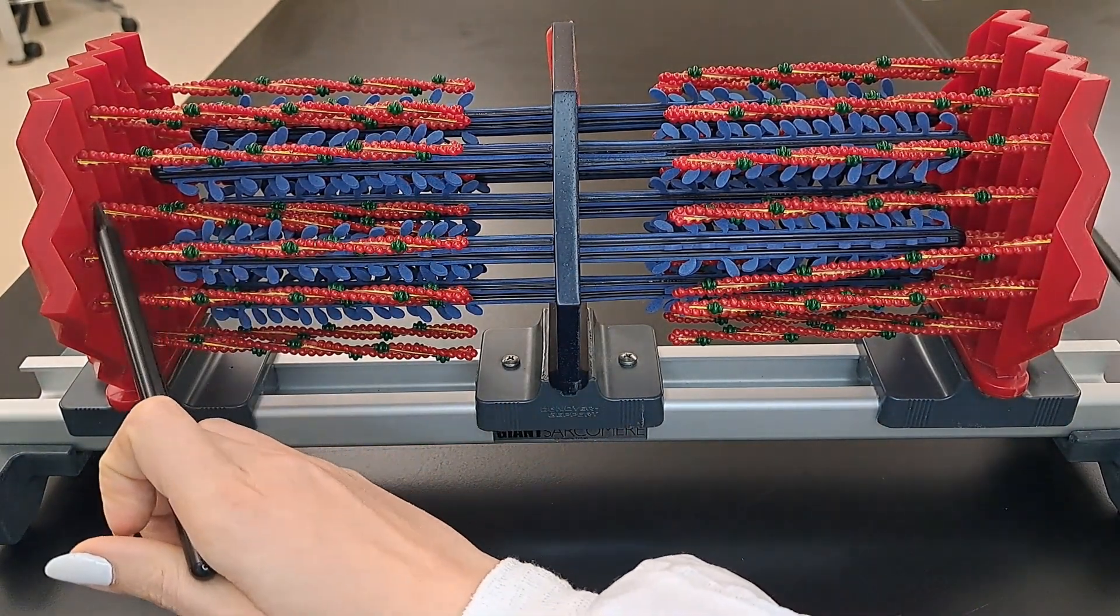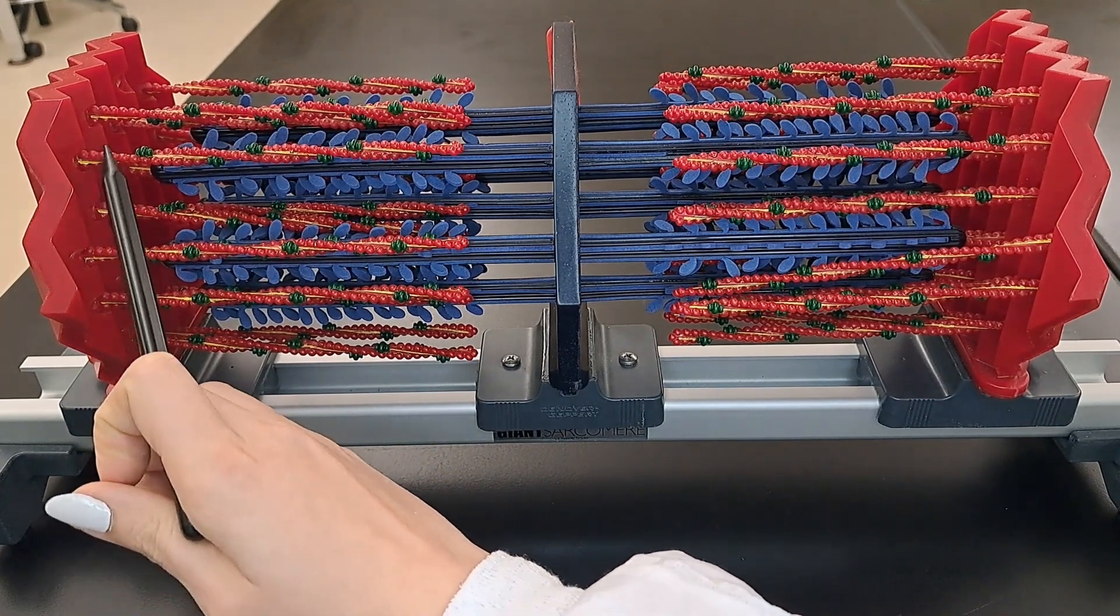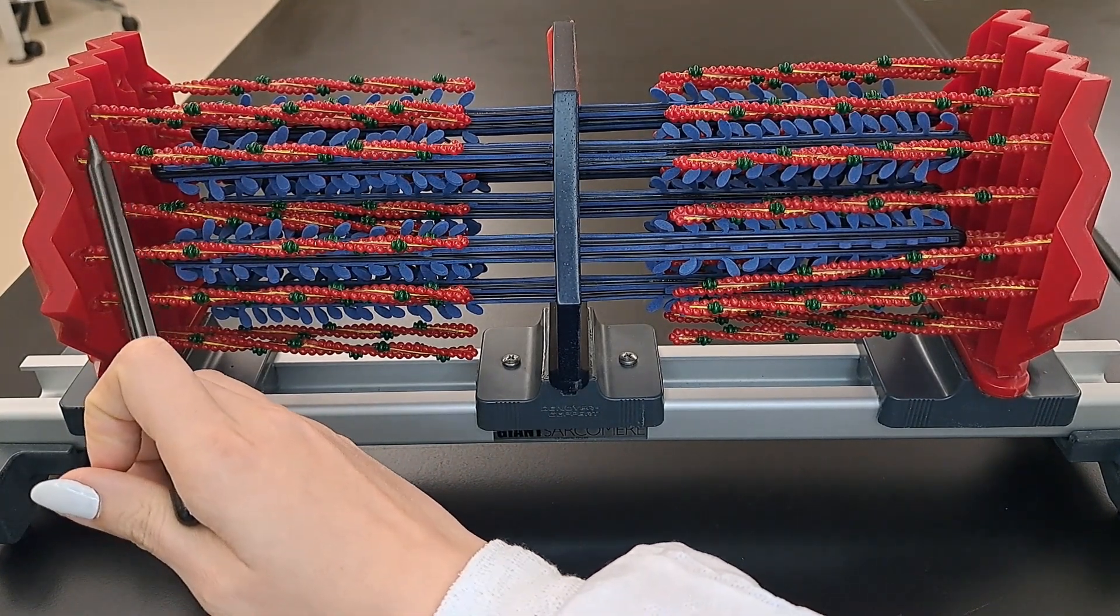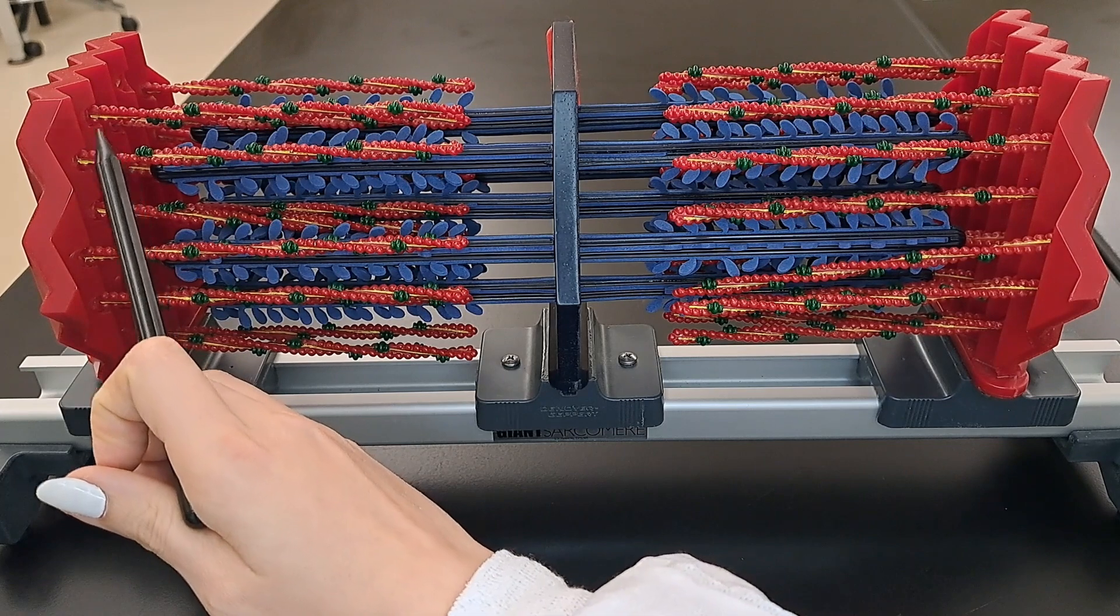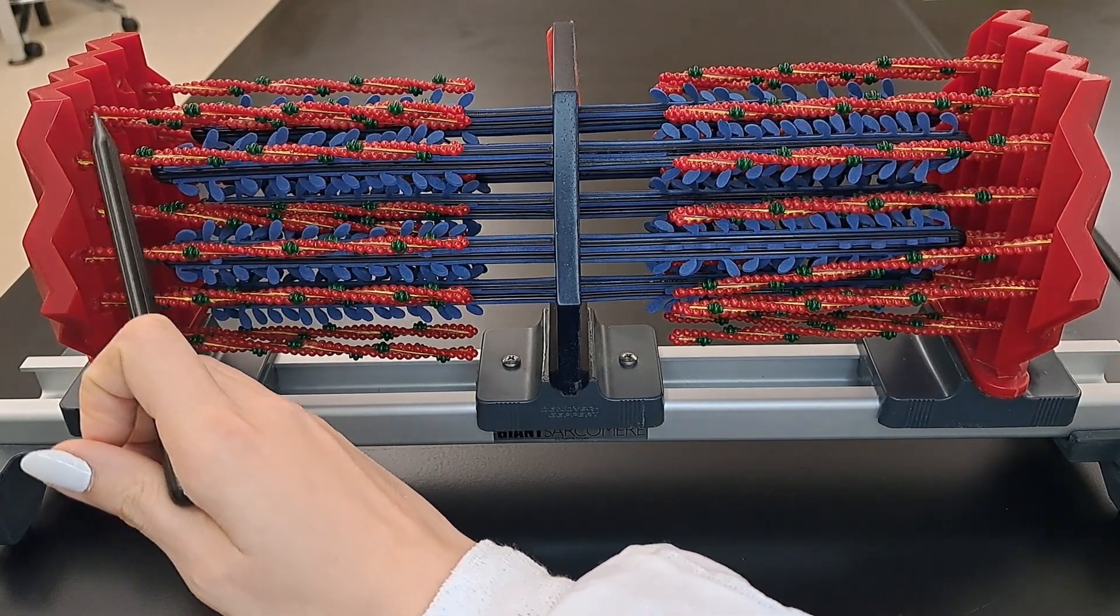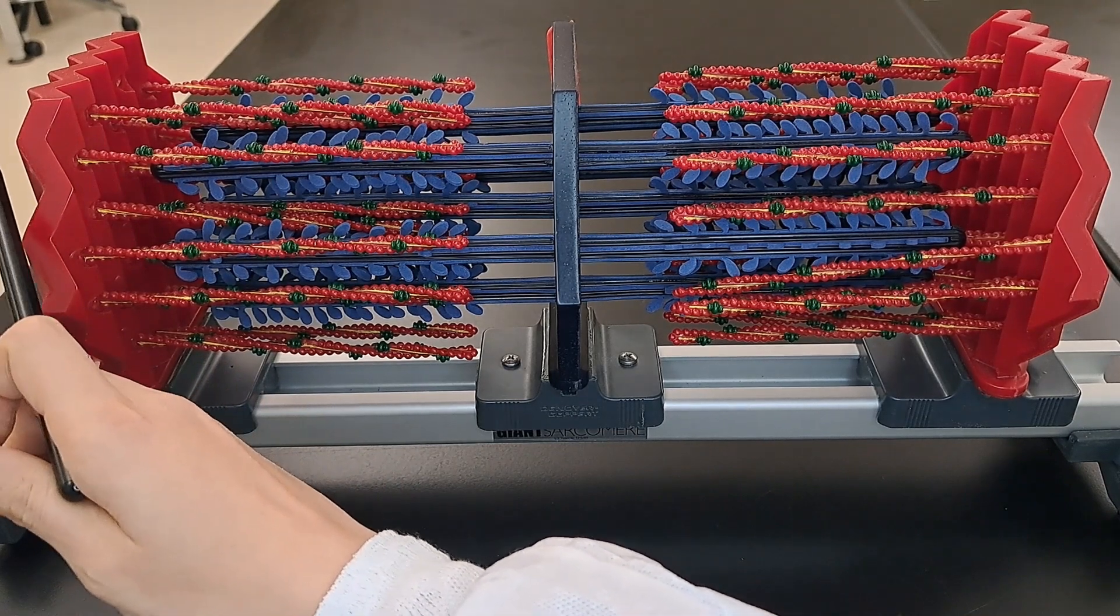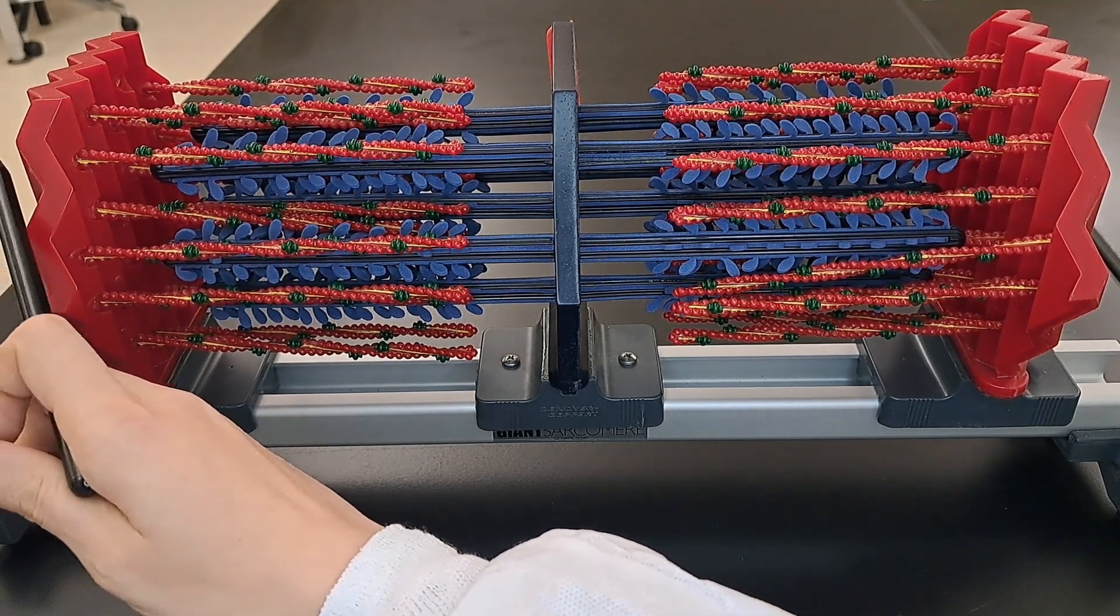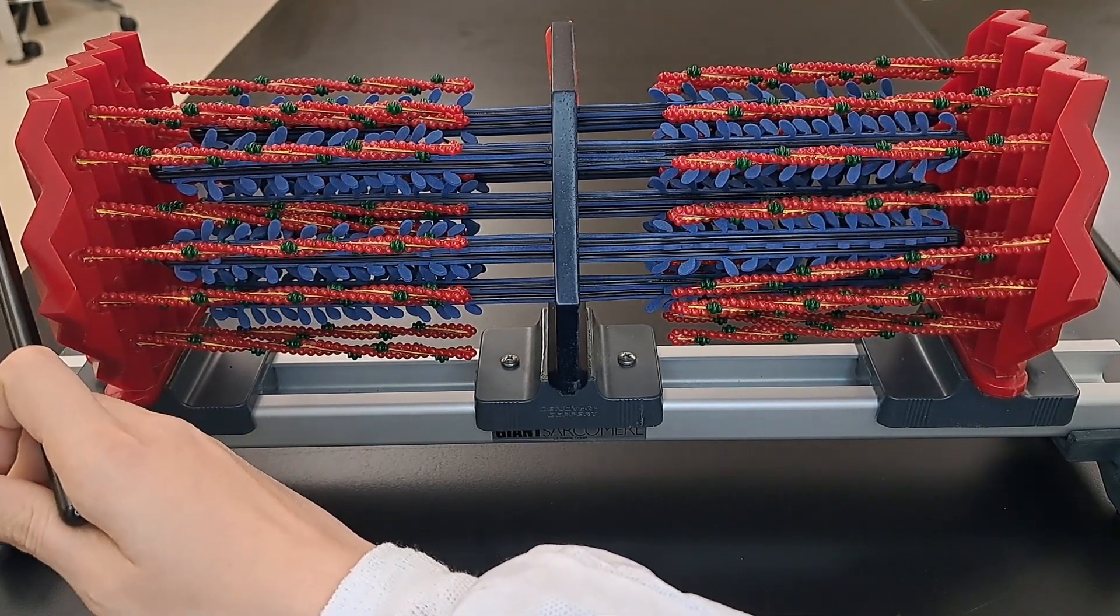We can also see part of the I band on this side. The I band extends from this side of the sarcomere to the nearby sarcomere, and it only contains the thin filaments.